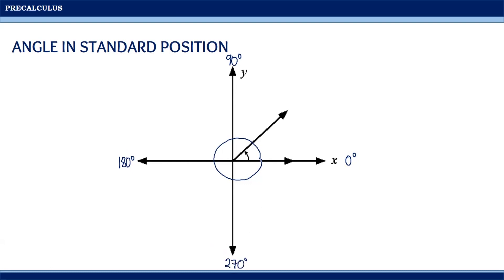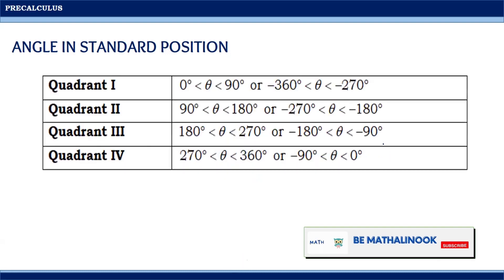And when the terminal side completes one revolution, it is equivalent to 360 degrees. Therefore, angles in standard position may fall in one of the quadrants as follows.